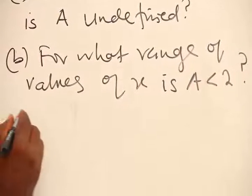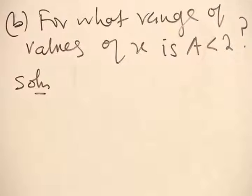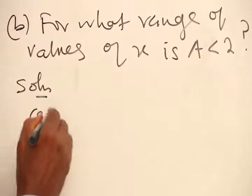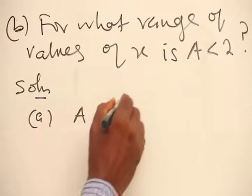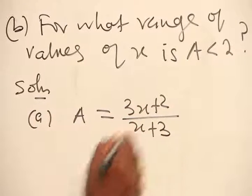Solution. Part A: We are given that A is equal to 3s plus 2 all over s plus 3.